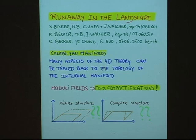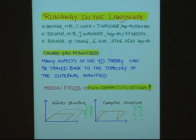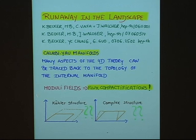Ever since Calabi-Yau manifolds were discovered 20 years ago, people realized that the properties of the internal manifold determine the properties of the four-dimensional theory. It didn't take long until models that resemble our four-dimensional worlds were constructed. However, people also realized that there are deformations of internal manifolds which lead to moduli fields. We can deform the Kähler structure or the complex structure, and flux compactifications are able to determine the moduli fields. So what we are going to see today is to what extent moduli fields are determined in flux compactifications.